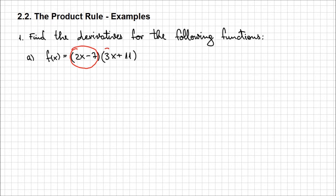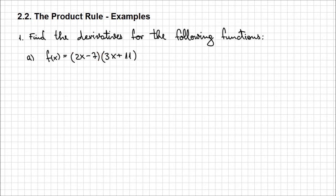Globally, I have a product. I can consider this first expression as a separate function g, and the second expression in the second parenthesis would be another function h. And then I can apply the product rule just as we know it: f prime = g prime·h + g·h prime.